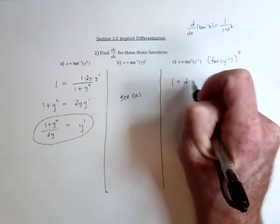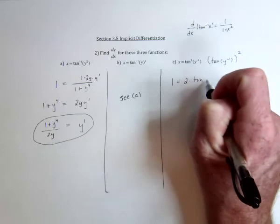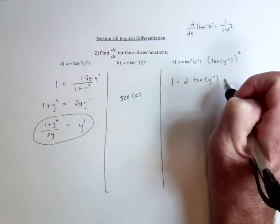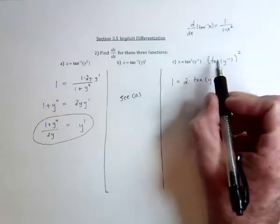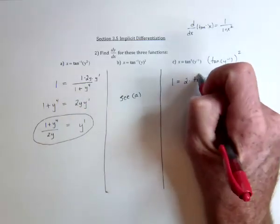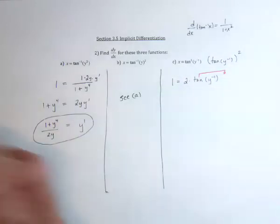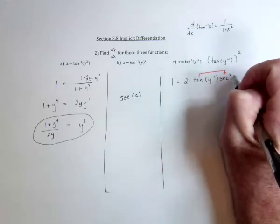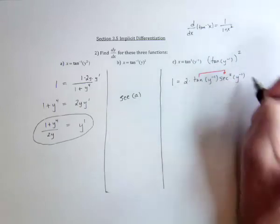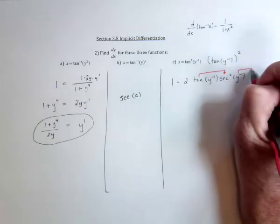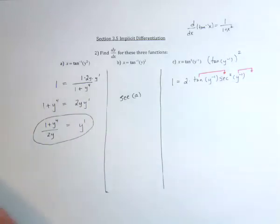And then the 2 goes down in front, and the tangent of y to the negative 1 stays there. Now the next innermost function is tangent, so we need to take the derivative of tangent. The derivative of tangent is secant squared, and then finally take the derivative of the function that's inside there, y to the negative 1.